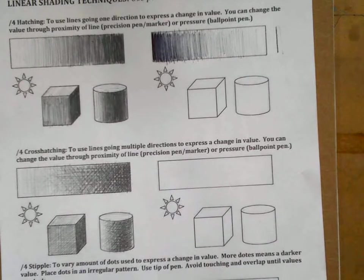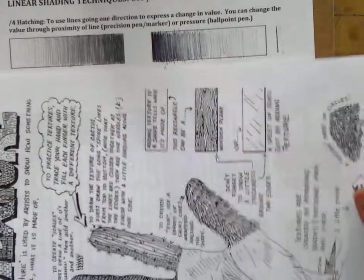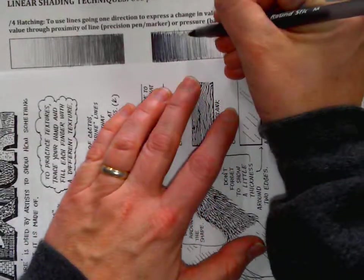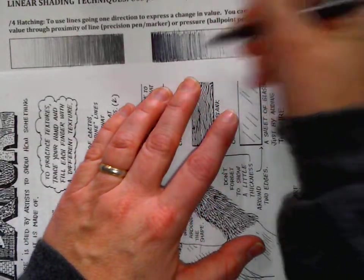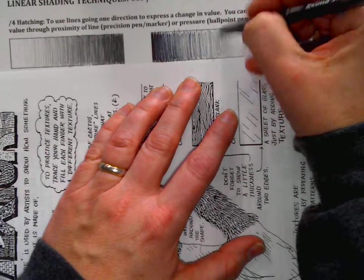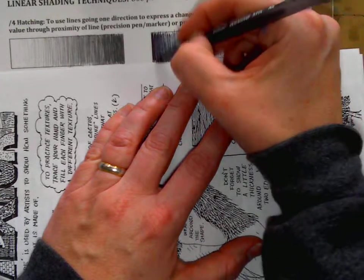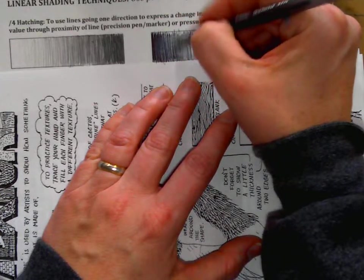When you're working with hatching, you've got to be careful of your edges. Sometimes people will use a ruler or another object or a sheet of paper to keep their edges nice and clean. Most of the time, your hatching probably won't be quite this long since you're working in a small miniature drawing.